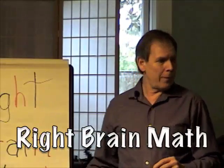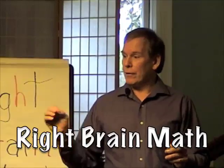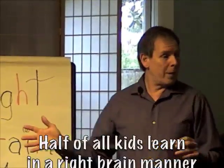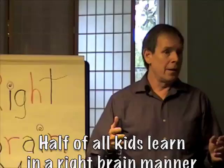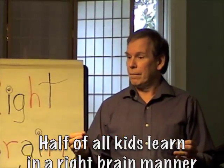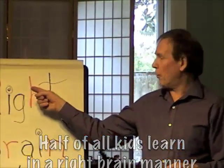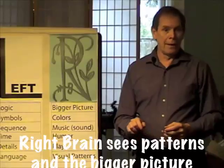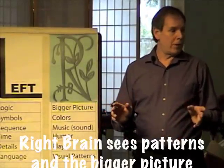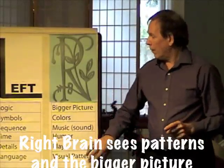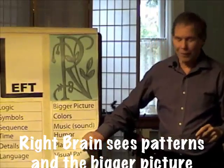We're talking today about right brain math. Math is usually taught as a left brain subject. Our most famous mathematician is Albert Einstein, who is a flaming right brain thinker. Now, what do we mean by visual patterns for math? I'll give you some examples of it.